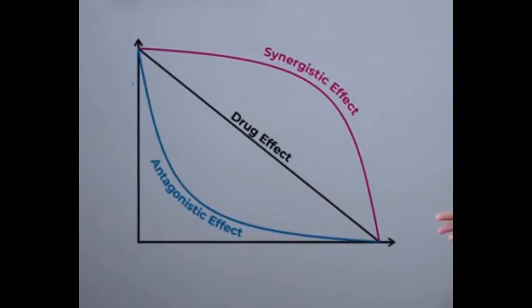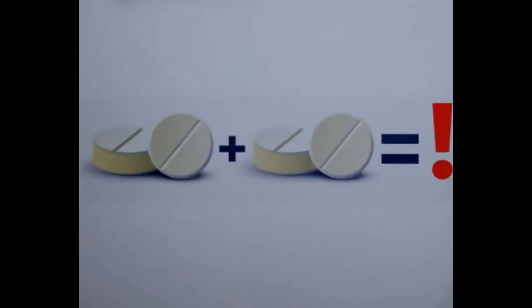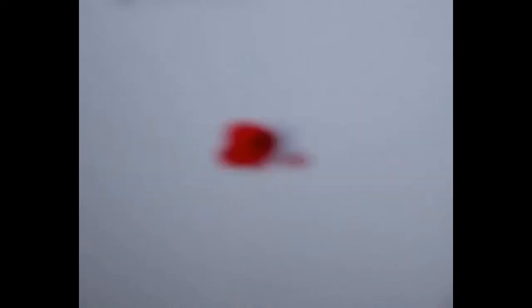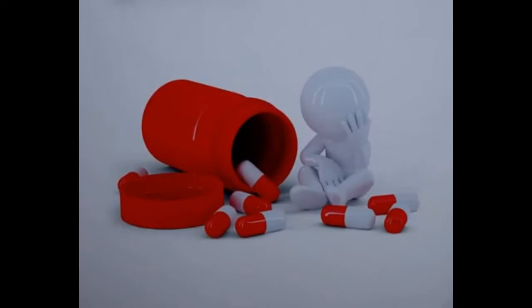This action can be synergistic when the drug effect is increased, or it can be antagonistic when the drug effect is decreased, or entirely a new effect can be produced that is not produced on its own. Typically interactions are the drug-drug interactions, the drug-food interactions, and the drug-disease interactions.